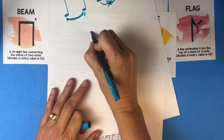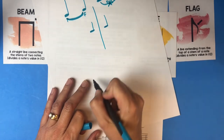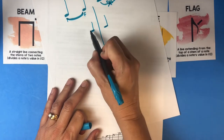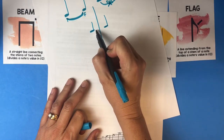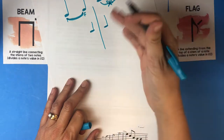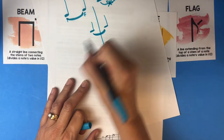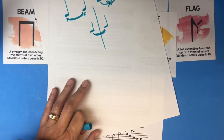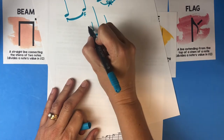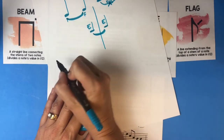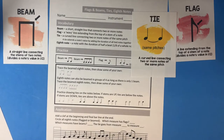Often the reason composers use ties is because there's a bar line, and they want a note to go across the bar line, but you can't put a half note there — there are rules about music. So sometimes they have to connect them with a tie. A tie is when it is the same note, like an E and an E, connected together.